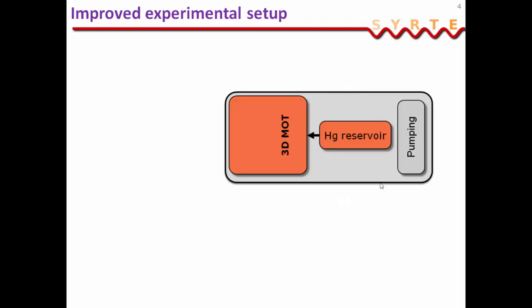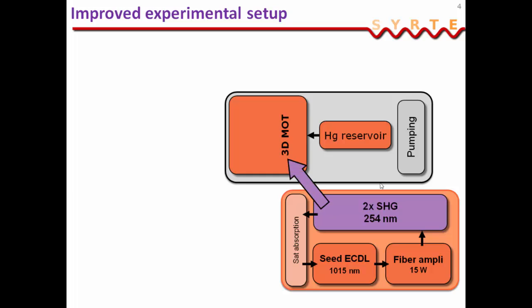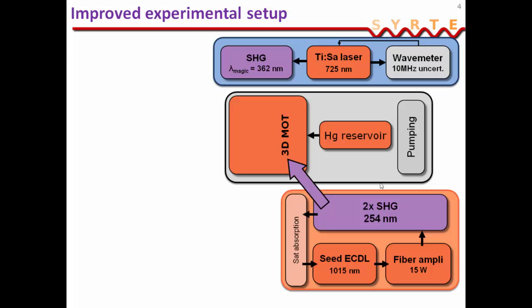So the experimental setup is rather simple. We have a reservoir of Mercury, which creates a vapor pressure, which is loaded straight into a 3D magneto-optical trap. The light for the magneto-optical trap comes from an external cavity diode laser, amplified and then doubled twice in frequency to go to 254 nanometers. Then we trap the atoms in the optical lattice. We have a titanium sapphire laser, which is locked to a wave meter with 10 megahertz uncertainty to measure the magic frequency. And we double this light to get to the magic wavelengths. We trap the atom in a vertical buildup cavity.